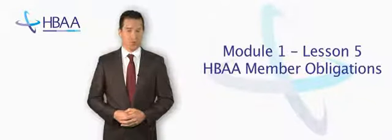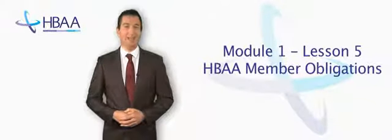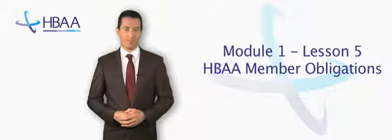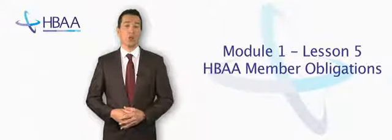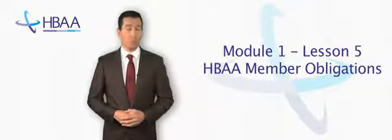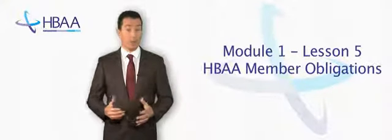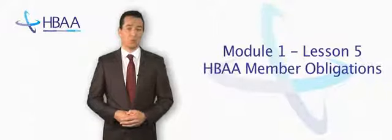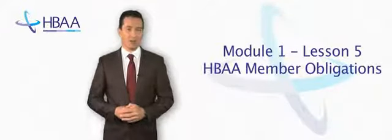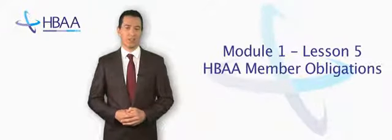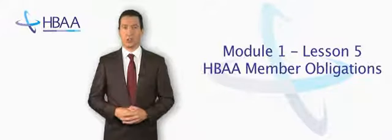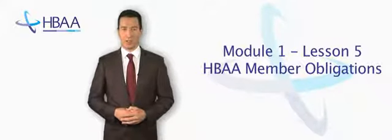Module 1, Lesson 5: HBAA Member Obligations. This lesson details the obligations which are to be observed by both agent members and venue members. It's abiding by these obligations that will ensure the industry maintains the highest standards of service, ethics and customer care, and avoids any suggestion of professional misconduct.